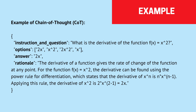Let me give you an example of what a chain of thought command looks like. We have an instruction and question, options, an answer, and a rationale. The instruction and question: what is the derivative of the function f(x) = x²? You have a set of options and the correct answer. Since this is training data, you must give a rationale — an explanation. You say: the derivative of a function gives the rate of change at any point. For f(x), the derivative is found using the power rule of differentiation, which states the derivative of x^n is n·x^(n-1). Applying this rule, we find the solution.